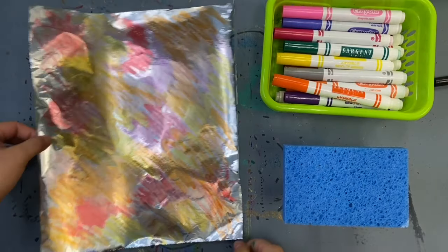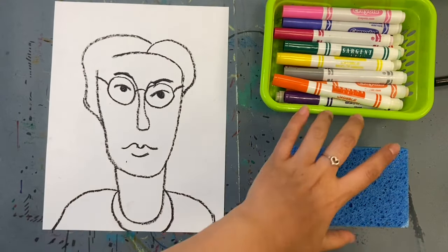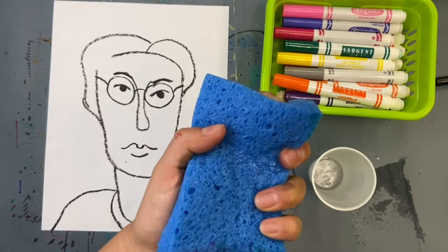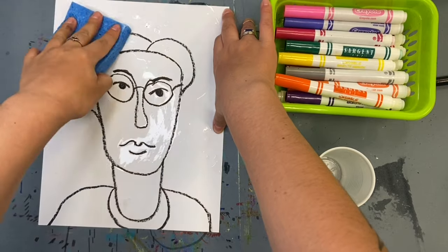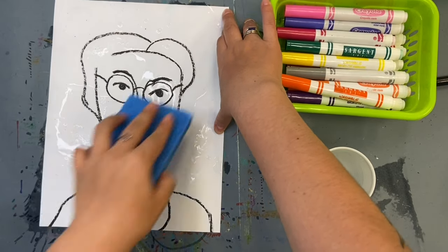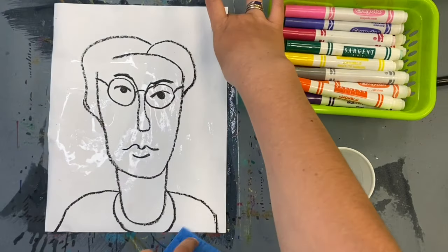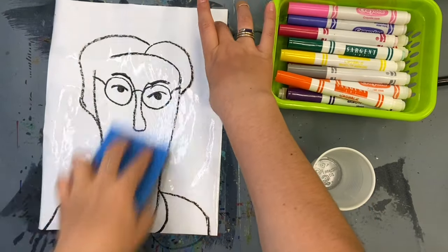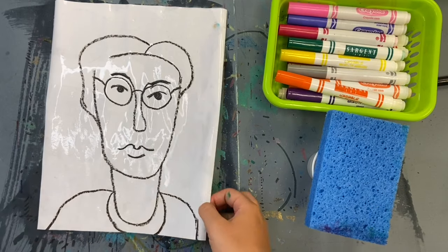The second way to foil print involves a sponge. When your foil is covered in markers, use a wet sponge to carefully blot the drawing side of your portrait. We want the paper to be wet, but not so wet it starts ripping. Use the sponge to wipe away any water puddles. When your paper is wet, turn the portrait onto the foil.